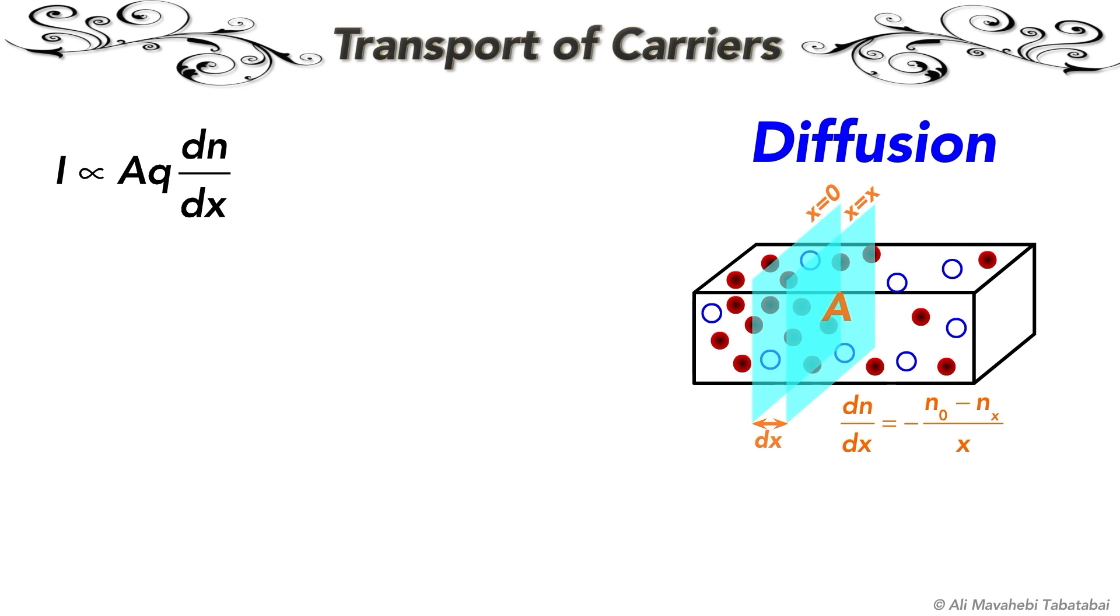We can convert this proportion to equality by adding diffusion constant, which is shown by the capital letter D with subscript N for electrons and subscript P for holes.